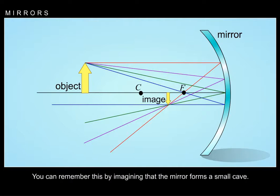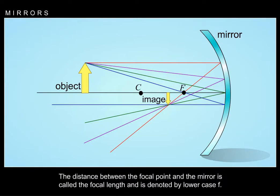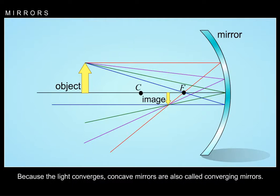You can remember this by imagining that the mirror forms a small cave. If this mirror is parabolic, all light rays going in that are parallel to the axis of the mirror are focused at a point called the focal point. The distance between the focal point and the mirror is called the focal length, denoted by lowercase f. Because the light converges, concave mirrors are also called converging mirrors.